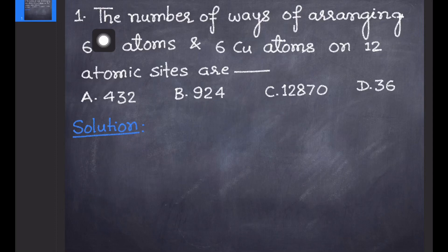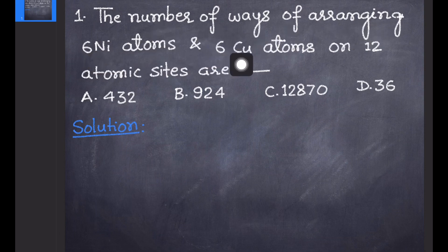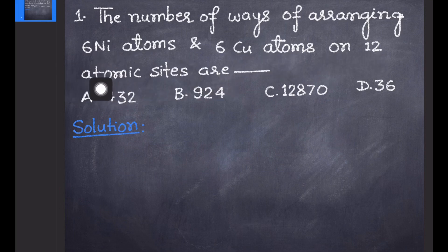In this lecture I am going to discuss the exercise questions of the topic equilibrium and kinetics from Vragwan material. The first question asks for the number of ways of arranging six nickel atoms and six copper atoms on twelve atomic sites. Basically, in this question you have to find the total number of configurations.